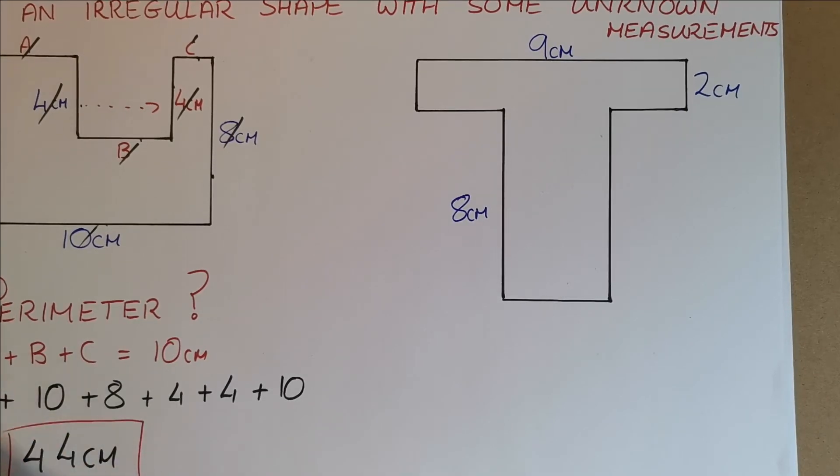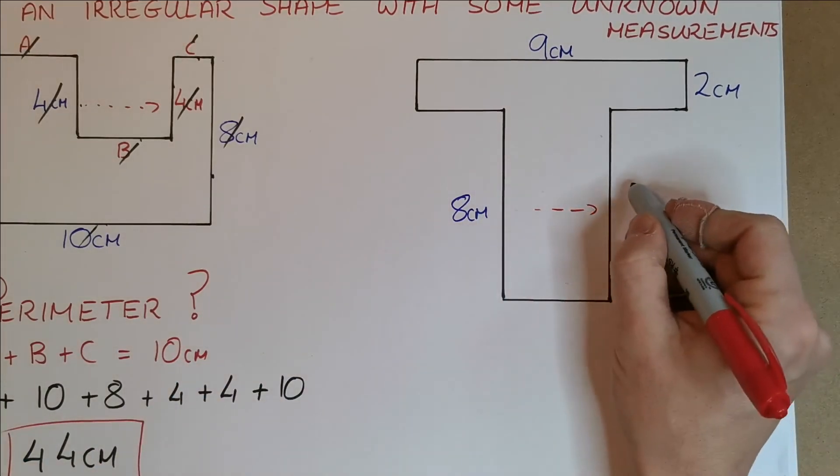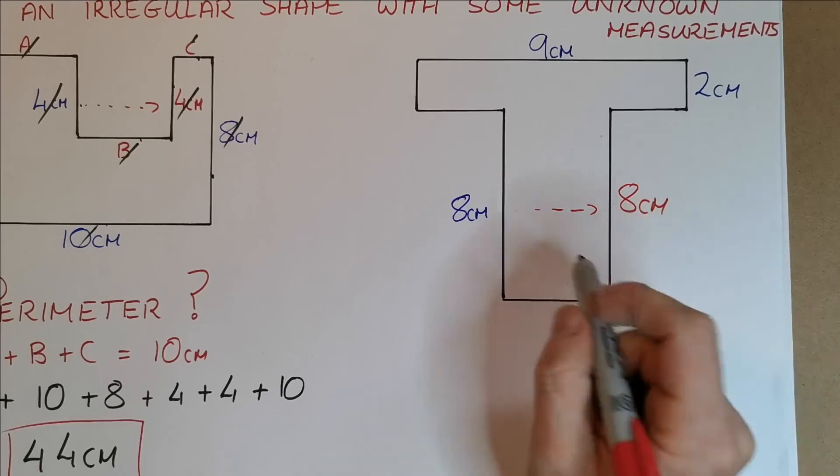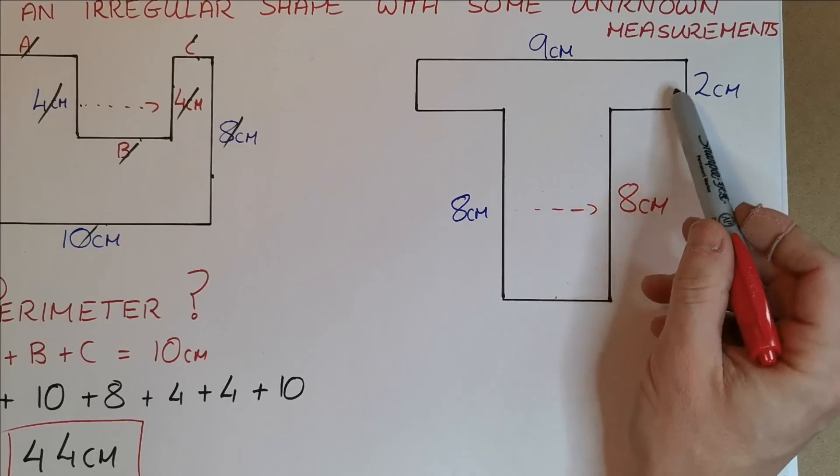Now, so hopefully you've had a go with this, and now I'll fill out what I think the answer is. So, we know this one here, this length must be 8cm, but first off let's count the sides actually, so we have 1, 2, 3, 4, 5, 6, 7, 8.